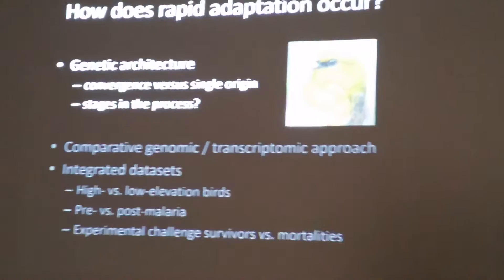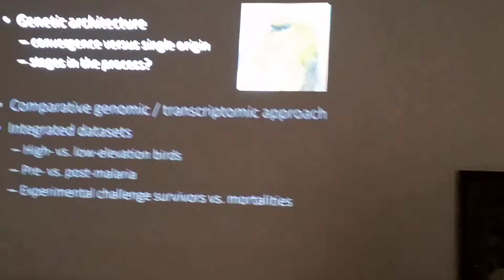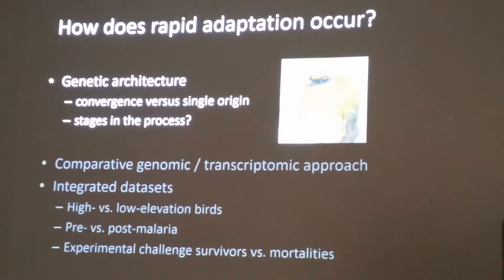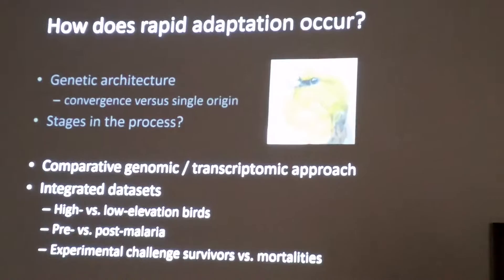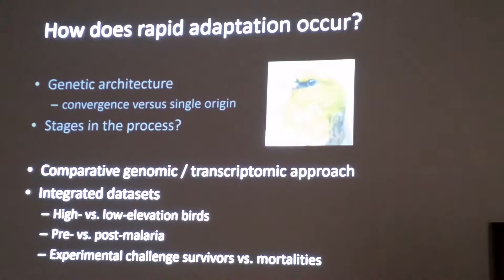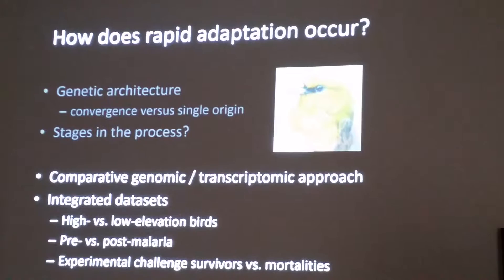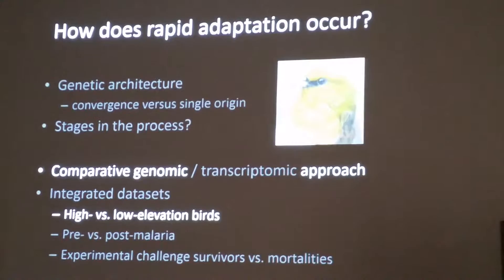We really want to understand how that's happening. The basis for all those questions is we have to first understand what the genetic architecture of these changes are — what is the genomic underpinning of tolerance to avian malaria? We take a really multi-pronged approach to answering this question, primarily using genomics and transcriptomics, tackling the question from multiple spatial, temporal, and experimental scales. Today I'll just be talking about genomics at the spatial scale within the island of Hawaii.